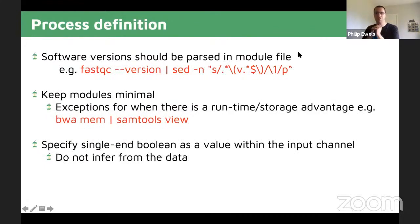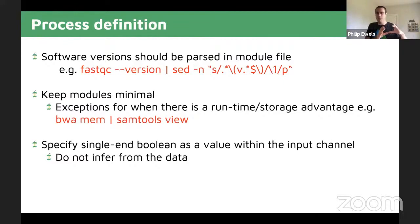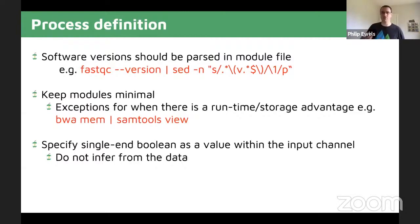Currently, NFCore pipelines have one process that calls every single tool used in the pipeline with a version command and writes all of these to files, which are then used to grab versions for a MultiQC report. Going forward, instead of having all version commands within a single process, we're asking that each process does its own version call into a file. We'd also like to use some bash tricks to clean those version strings up so we have a minimal file with just a version number for that tool, and then we'll collect those outputs and report on them in the same way.